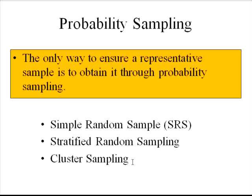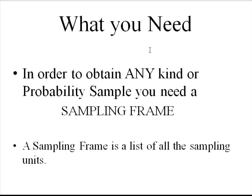As we discussed in the previous video, the only way to ensure a representative sample from the population is through probability sampling. So these are the techniques you will be using if you want a representative sample. But in order to get a probability sample, you need a sampling frame. All types of probability samples require a sampling frame.